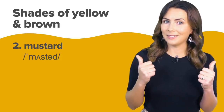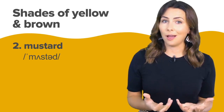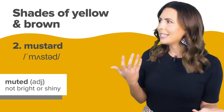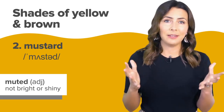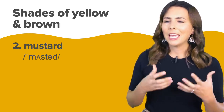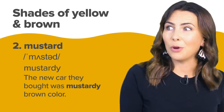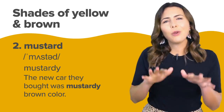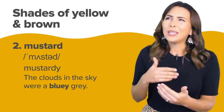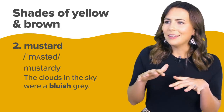Now this is mustard — a muted, darker yellow colour. Muted means that it's not bright or shiny. You can see that this colour isn't as bright as the lemon colour or the canary yellow. One of the really cool things about colours in English is that most of the time you can add a Y — so we could say 'mustardy.' The new car they bought was mustardy brown. So it's really great if you're not quite sure of the colour or the shade. You could say the clouds in the sky were a bluey grey or a bluish grey — ways to say it's sort of that colour, a little bit of that colour, a hint of that colour but not completely.